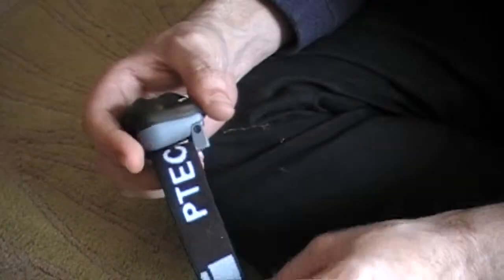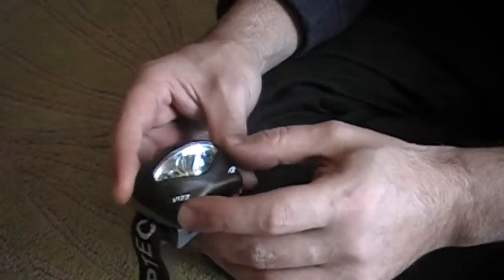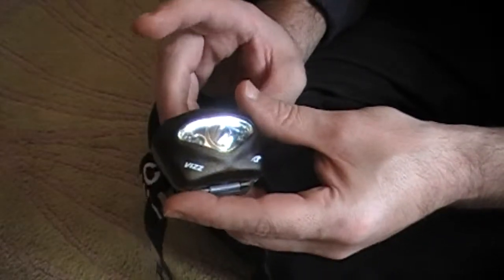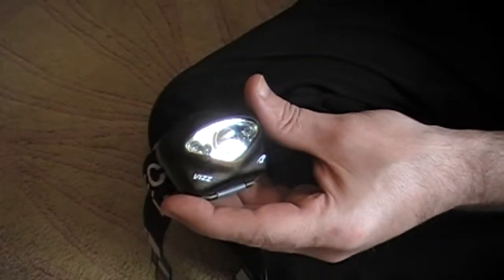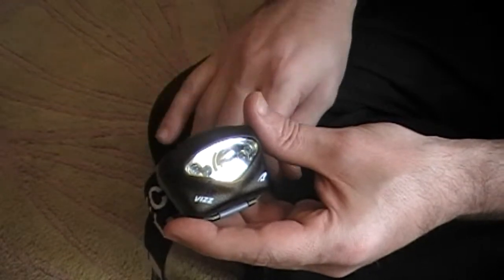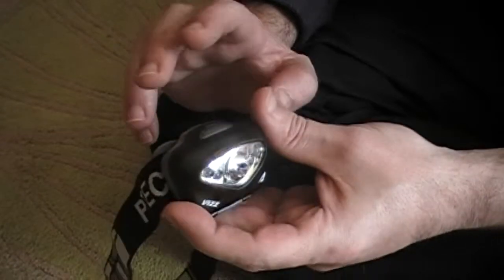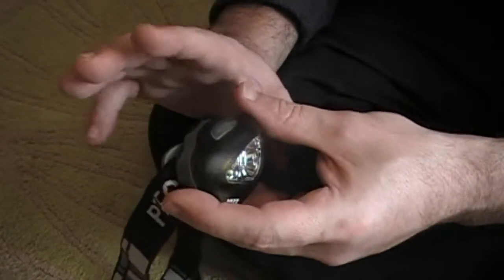So there's a quick little review of the Princeton Tech Viz. It's actually not a bad bang for the buck. It comes at around $50. You can pick it up from most outdoor retailers. But considering all the functions and features that it has, it's probably quite affordable.